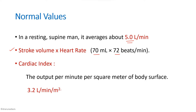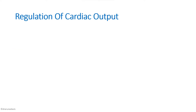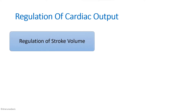Cardiac index is the cardiac output per minute per square meter of body surface area, with a normal value of 3.2 liters per minute per meter squared. The regulation of cardiac output can be divided into regulation of stroke volume and regulation of heart rate.